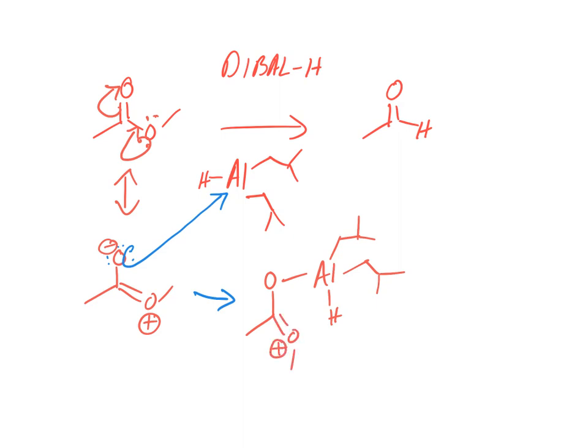This is a plus charge. The minus charge is now on the aluminum. But where's the electron density really at? The oxygen and or the hydrogen or these carbons. But it's called diisobutyl aluminum hydride for a reason.